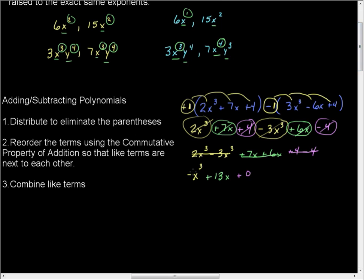Now, if you put a 1 in front of the x³, that's perfectly fine. It's typically more accepted, however, if there's a 1 there, it's just understood. And so it's just -x³ + 13x, and that's it. That's subtracting polynomials.